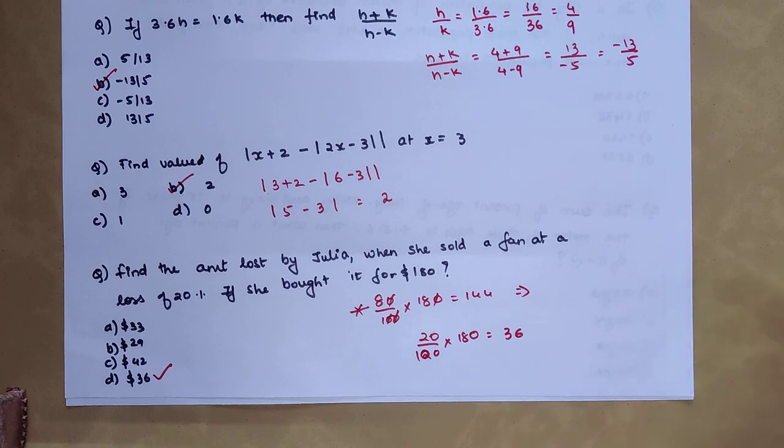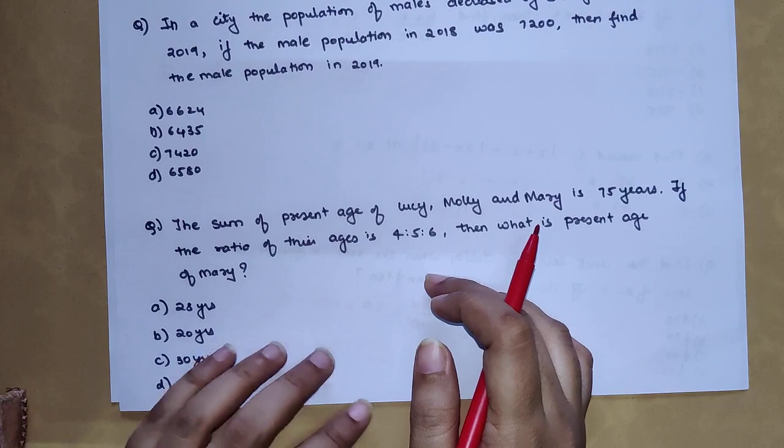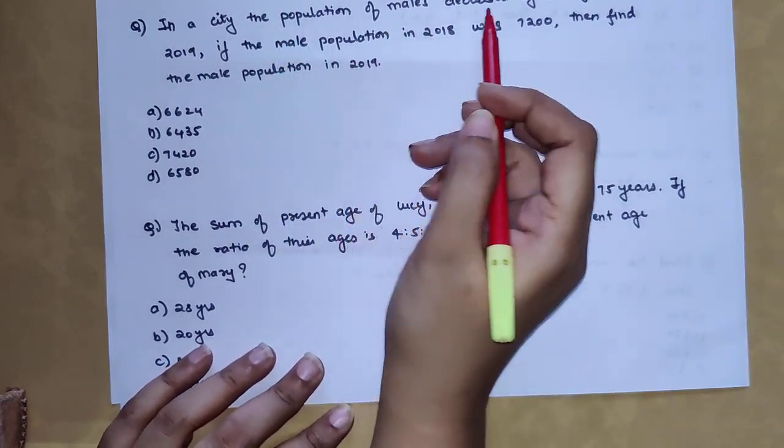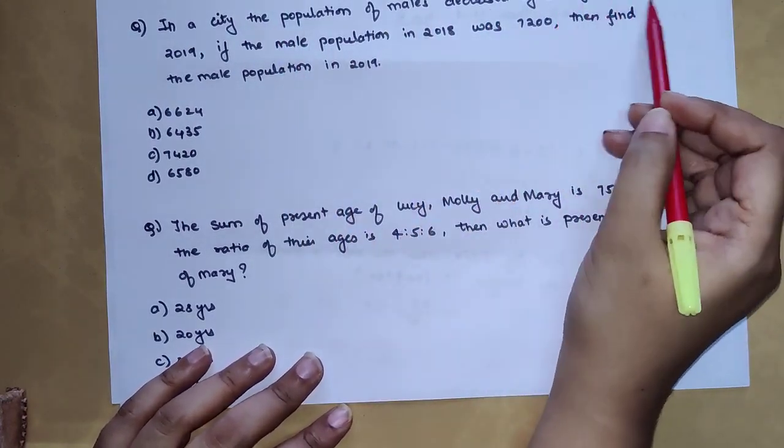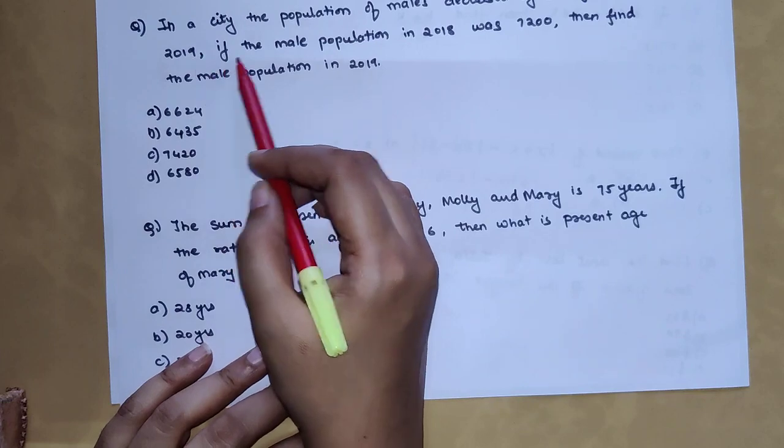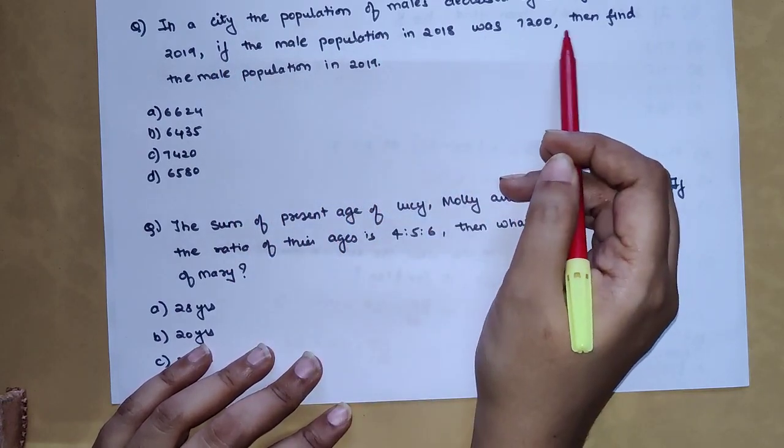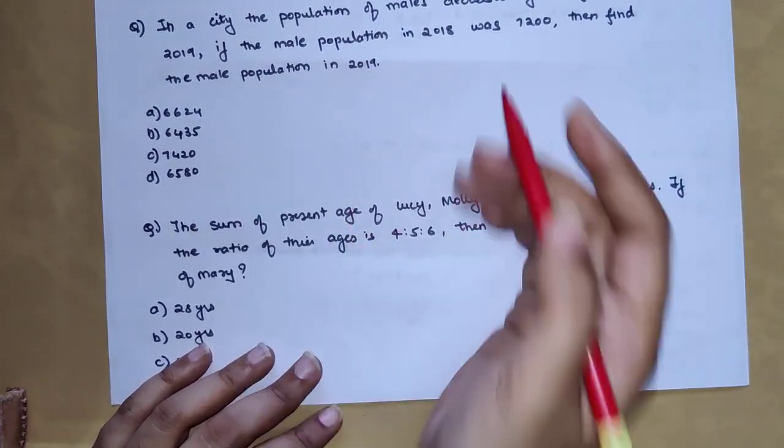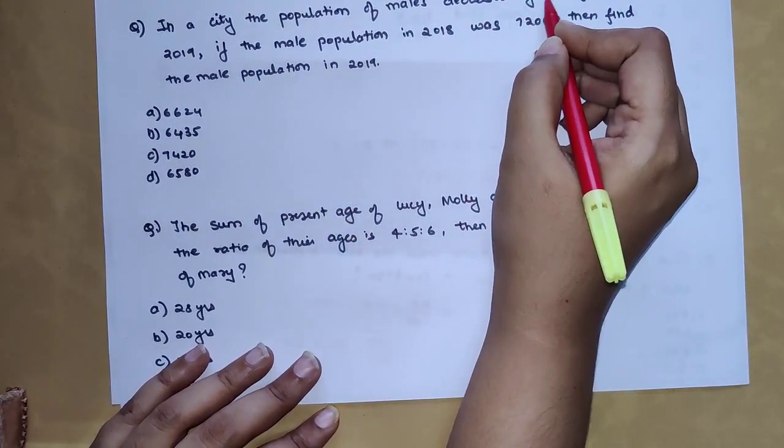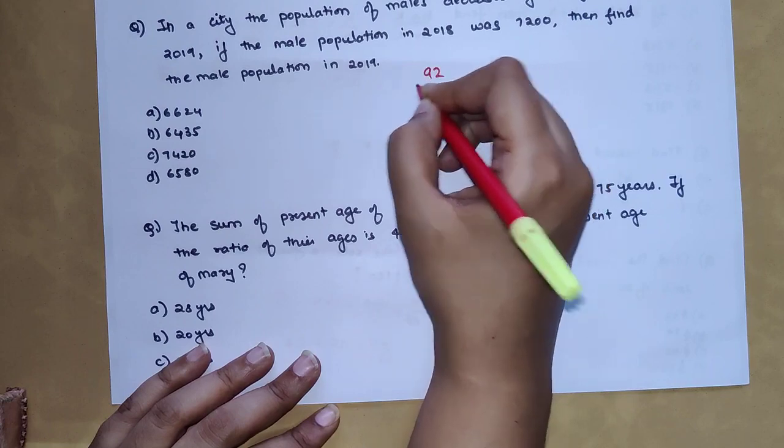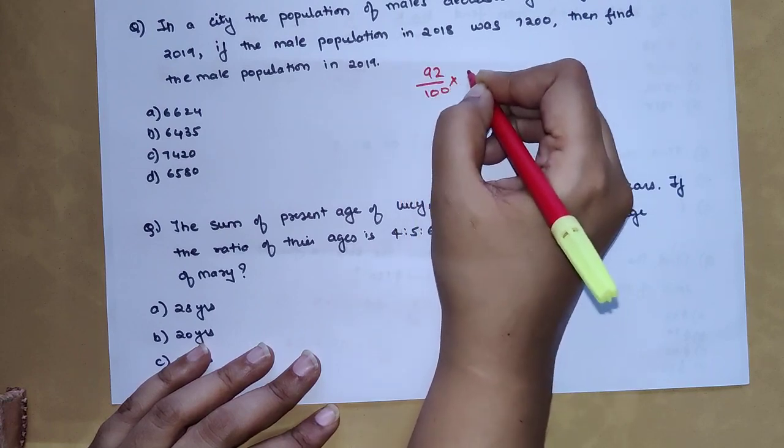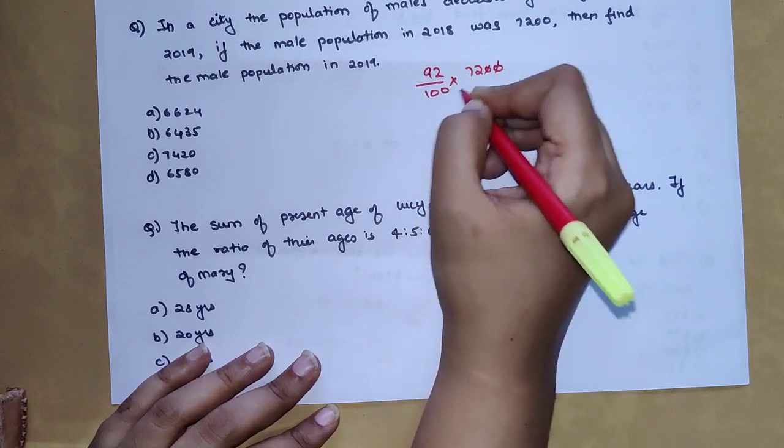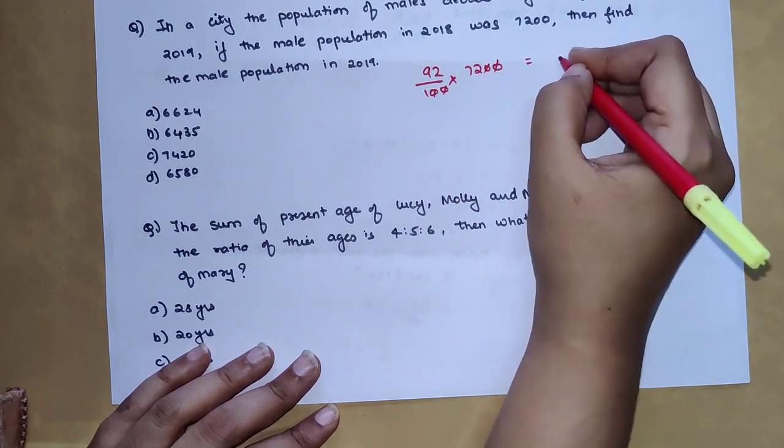The next question is: In a city the population of males decreased by 8% from 2018 to 2019. If the population in 2018 was 7200, find the population in 2019. So here what I told you previously would work. You subtract 8 from 100, so you will directly do 92 percent of 7200.